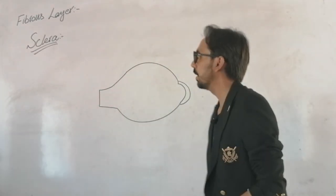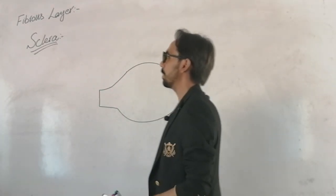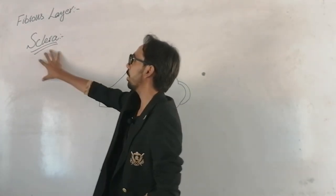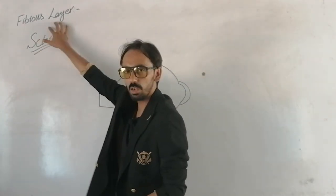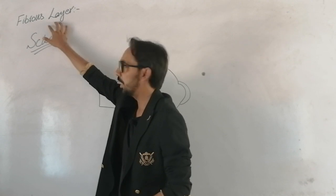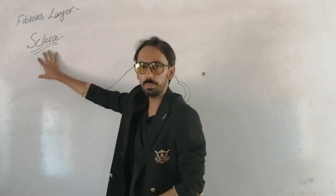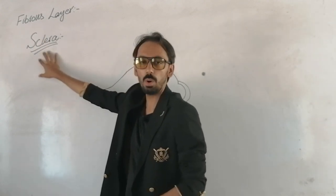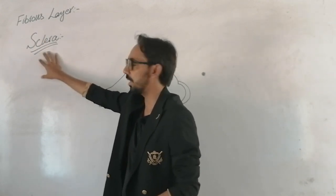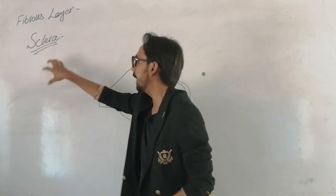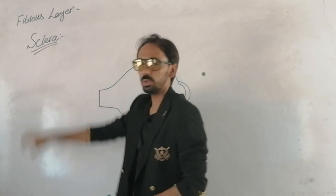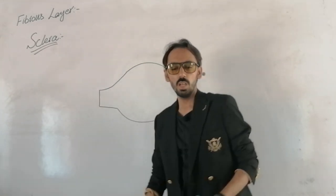In this lecture, we will discuss the second structure of the fibrous layer of the eyeball, which is called the sclera. We have discussed the cornea in our last lecture, and now we will discuss the sclera.